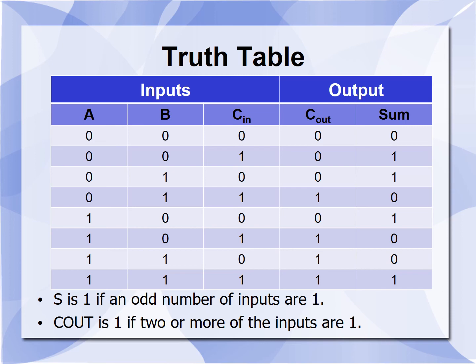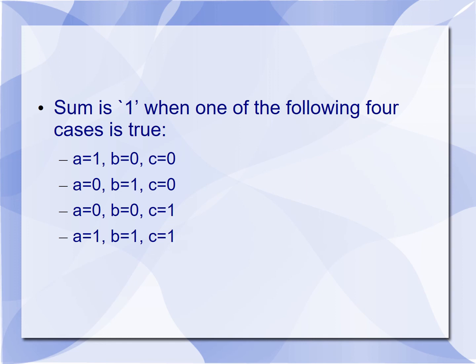If the inputs to the XOR gate have an odd number of high inputs, it produces a high output. If the inputs to the two AND gates are both 1, it produces a high output, that is, the carry output is high. Sum is 1 when one of the four cases is true: A=1,B=0,C=0; A=0,B=1,C=0; A=0,B=0,C=1; or A=1,B=1,C=1. In all these cases, as an odd number of inputs are high to the XOR gate, it produces a high output.